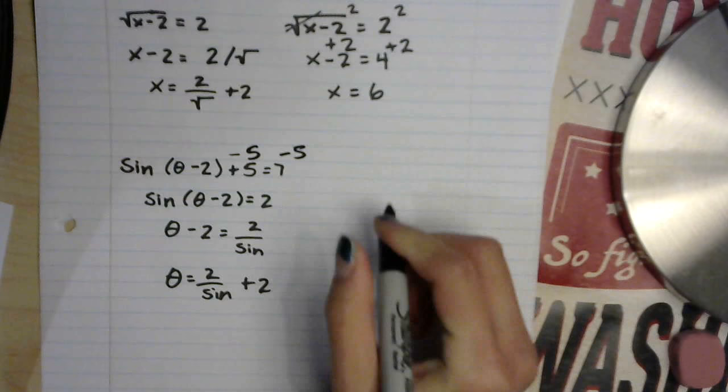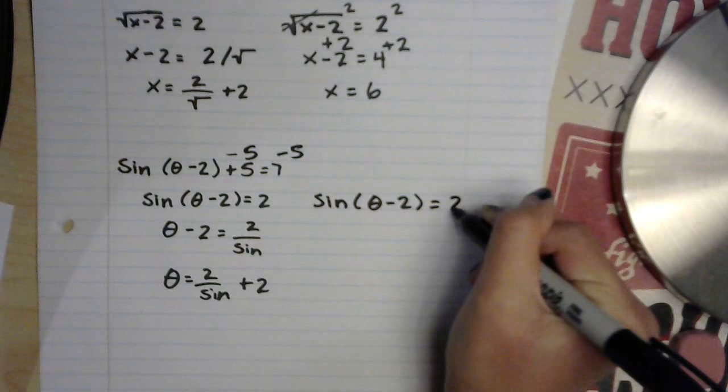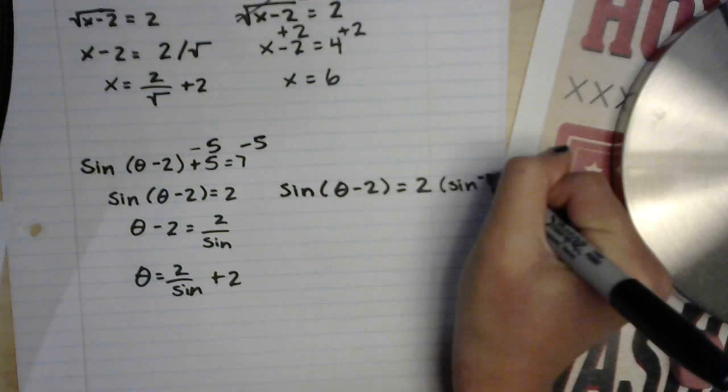Subtracted 5 from both sides. So sine of theta minus 2 equals 2. And then we multiply both sides by arcsine.